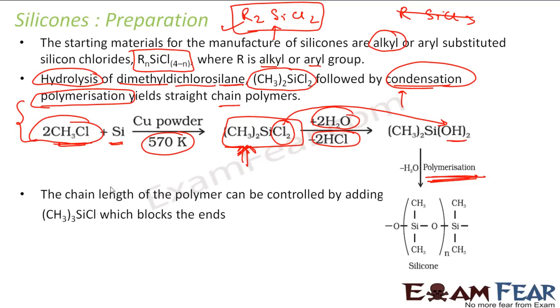The chain length of the silicone polymer can be controlled by adding CH3SiCl3 to form blocks at the ends.